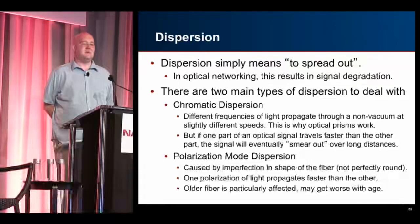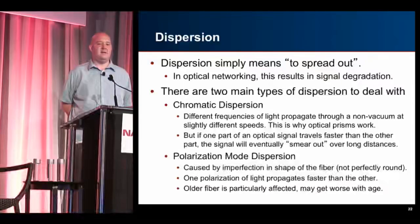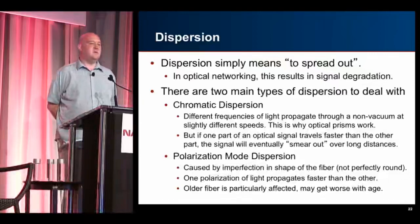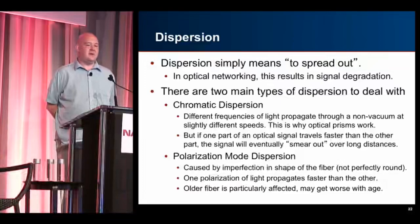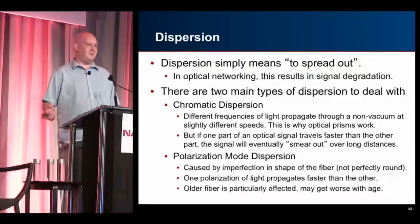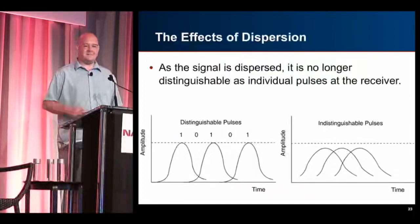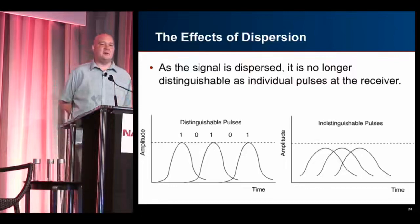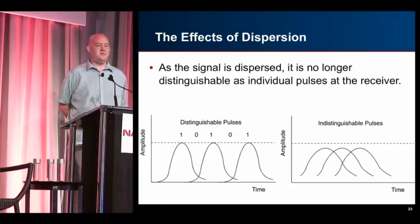The other type is polarization mode dispersion (PMD). The fiber itself is never perfectly round — they try to make it as cylindrical as possible but it's impossible to get it perfect. One polarization of light propagates faster than the other. A lot of older fiber is especially affected by this and can get worse with age — freeze-thaw cycles can push the fiber around and misshapen it in weird ways. There are people with fiber from the early 80s that can't do more than 2.5Gbps because of all these issues. The visible effect of dispersion is that the signal gets smeared — you can no longer clearly distinguish a one from a zero.